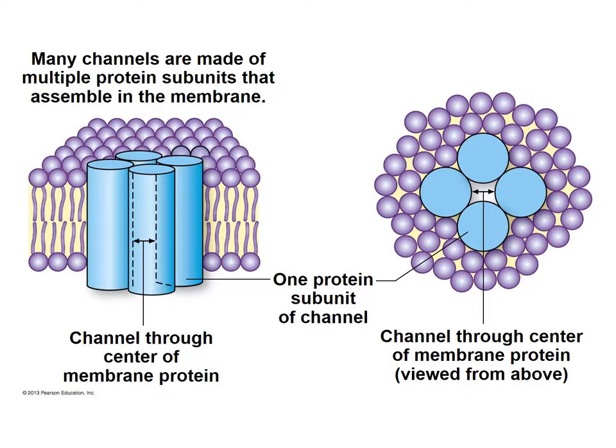Looking at channel proteins, here we can see an example of a channel protein that is a membrane-spanning or integral protein creating a water-filled pore. This allows for the movement of substance through the channel by simple diffusion — movement from high to low concentration — and is usually limited to smaller molecules like water or selected ions. An example of a channel protein in the body is an aquaporin, special channels found in the kidneys that allow for the movement of water across the membrane to help prevent dehydration.